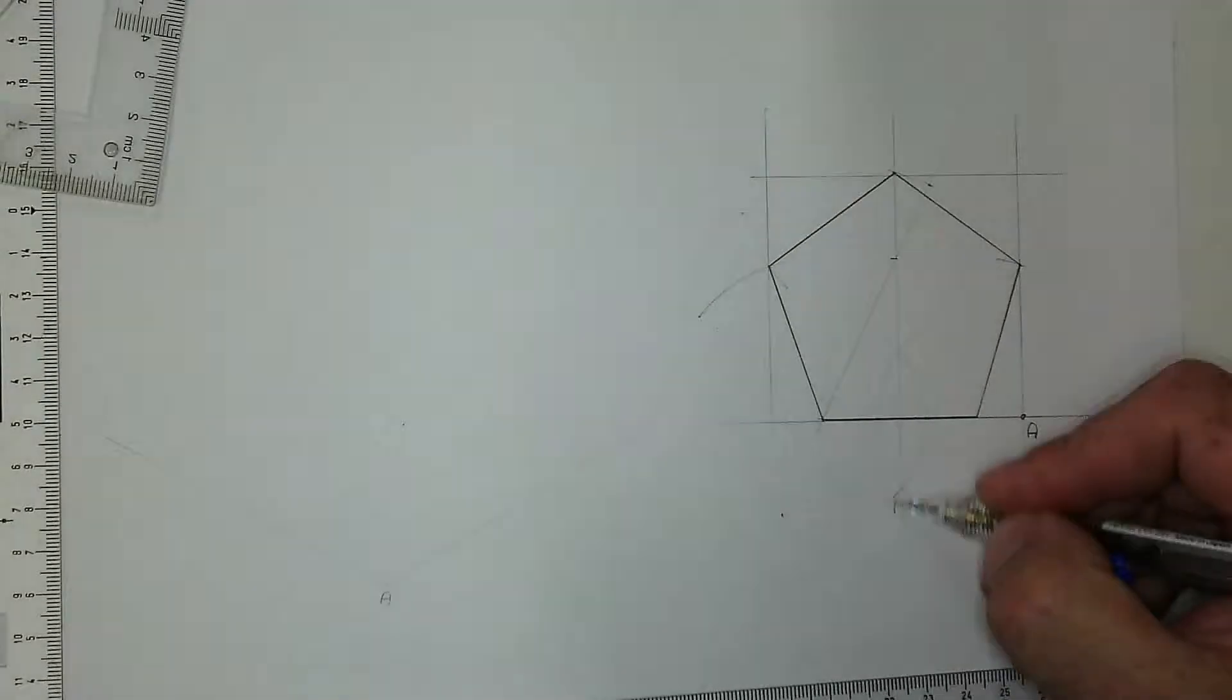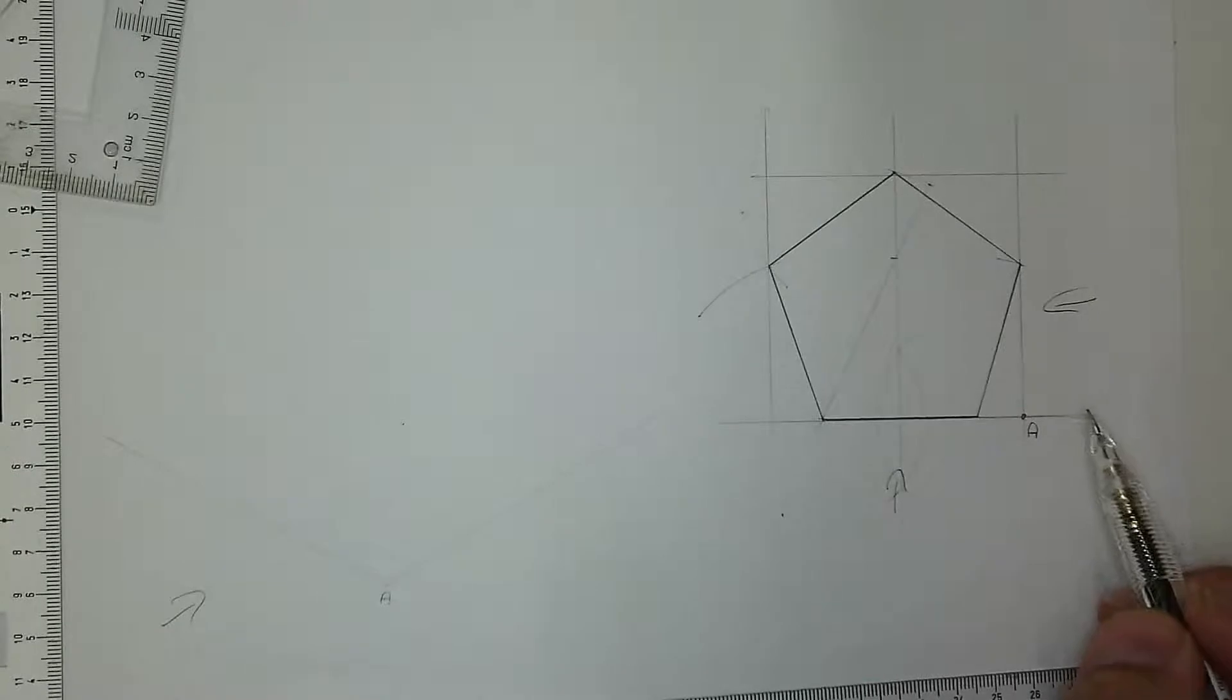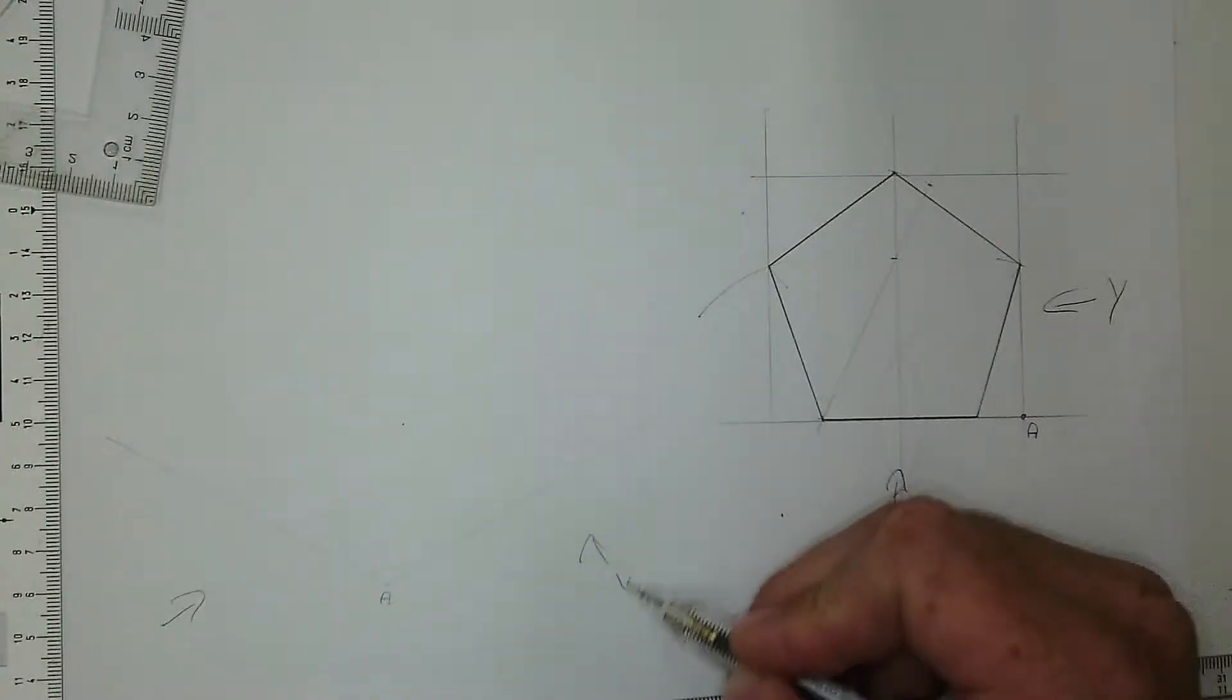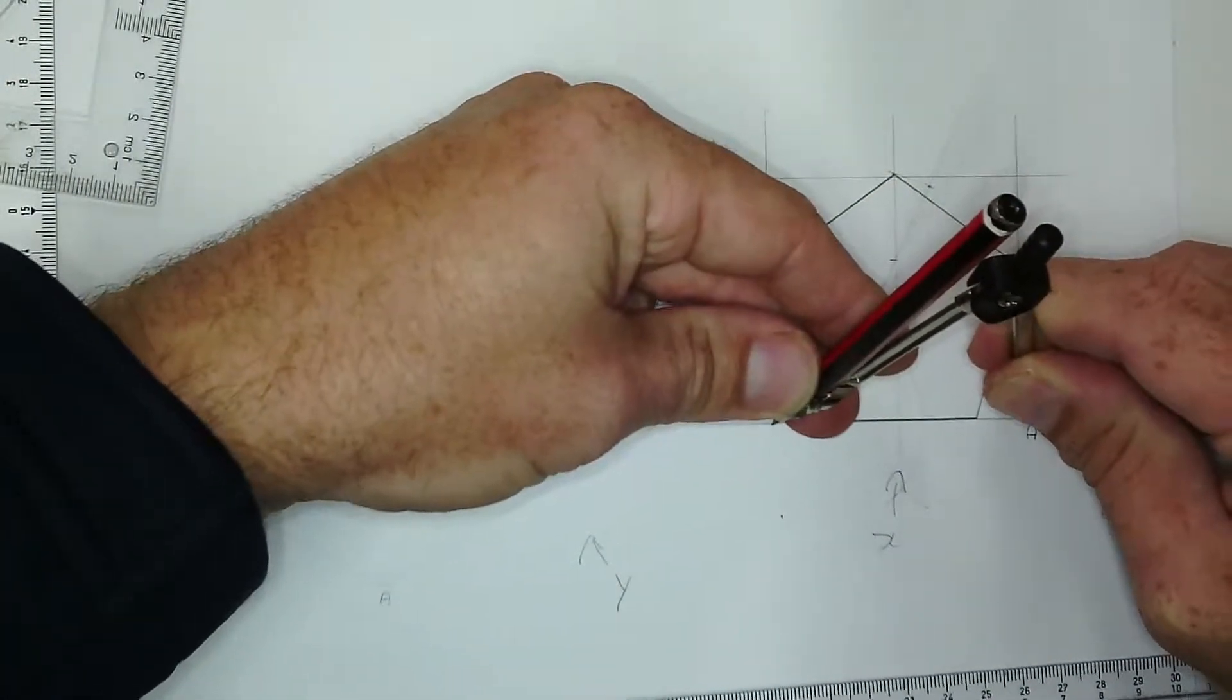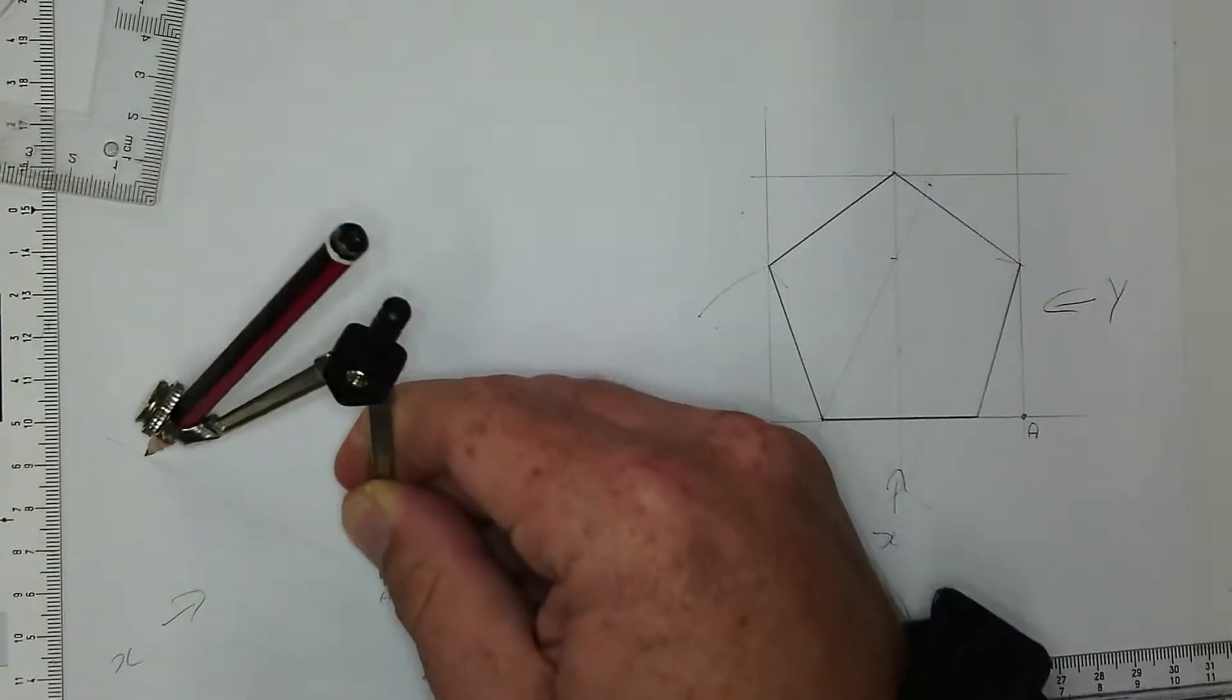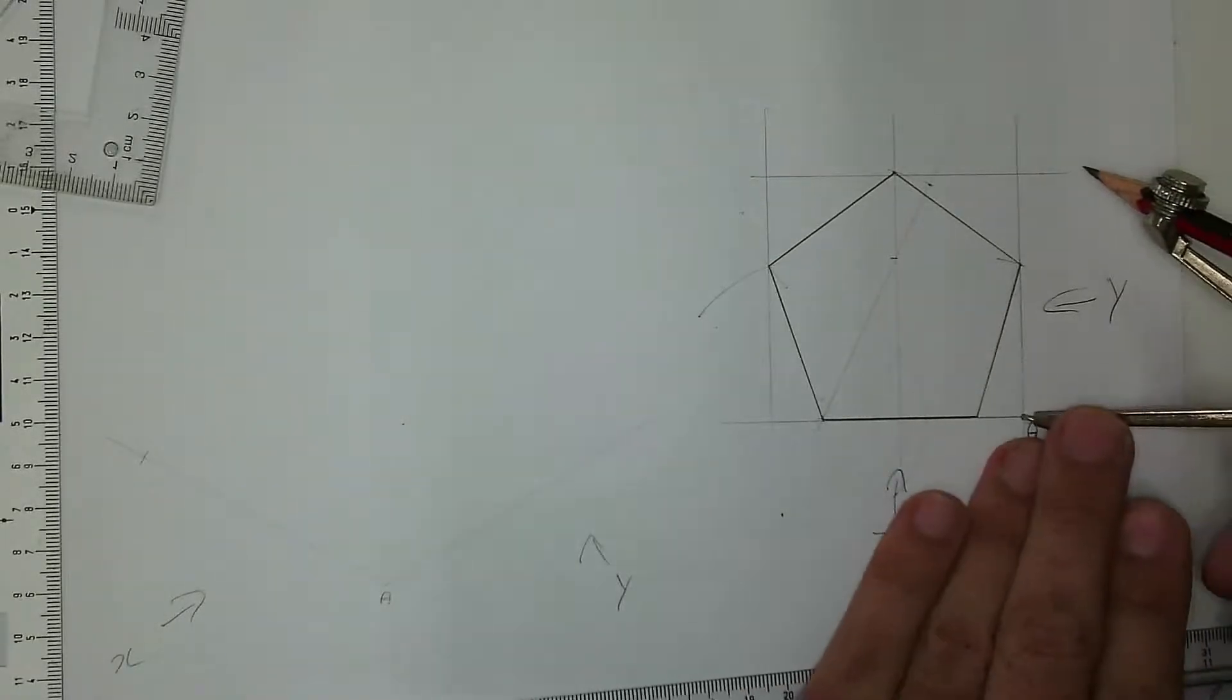Now point A is here, so point A will be here. So this entire view, let's call it Y, will go on this side. Y will go on this side, and X will be from this side. All I'm going to do is take the measurement from A to here and I'm going to put it down there to get my block.